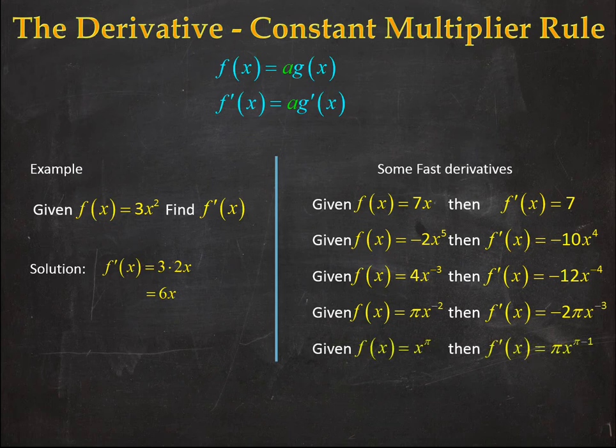Or even x^π, which is simply πx^(π-1). That is how easy the constant multiplier rule is. Hopefully this video was helpful. Thank you for watching.